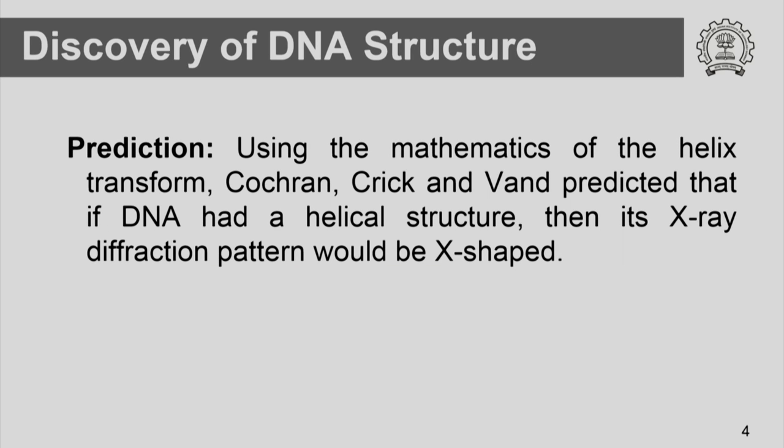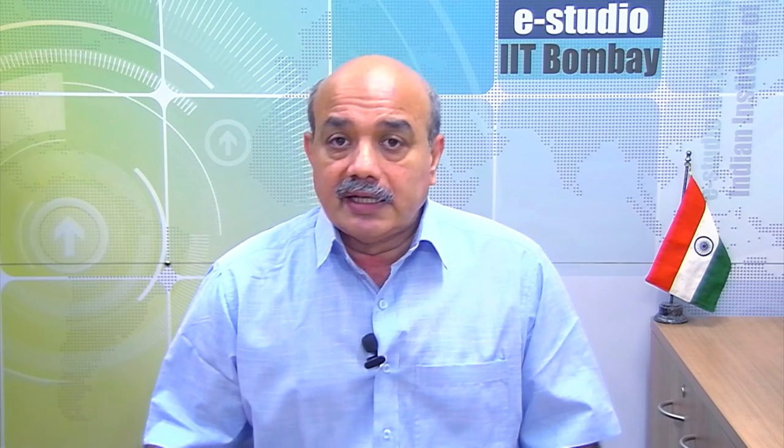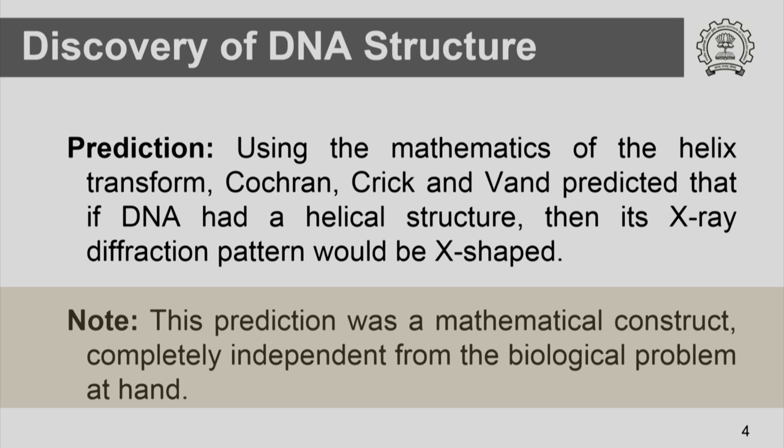What is the prediction you can come up with if you assume a helical structure? Using the mathematics of helix transforms, Cochran, Crick, and Vand predicted that if DNA had a helical structure, then its X-ray diffraction pattern would show an X-shape. So you expect a certain pattern in the X-ray diffraction of the DNA molecule if you hypothesize that the structure is like a helix. This is purely a mathematical prediction — a mathematical construct completely independent from the biological problem at hand.